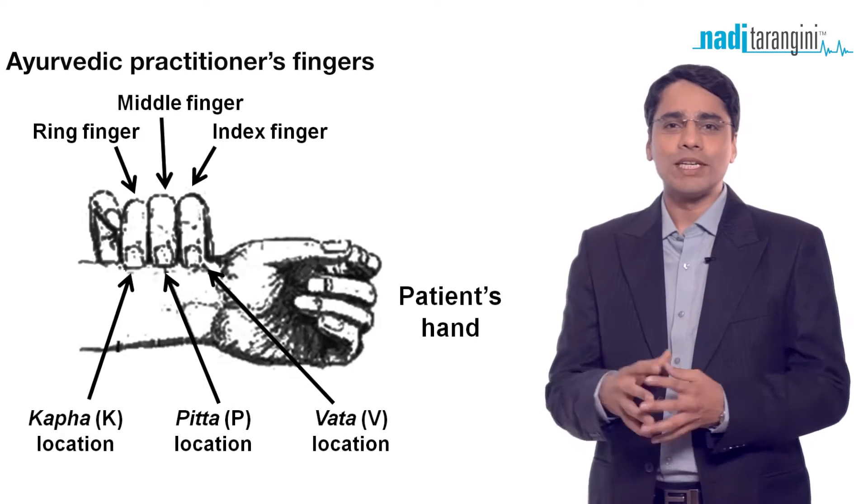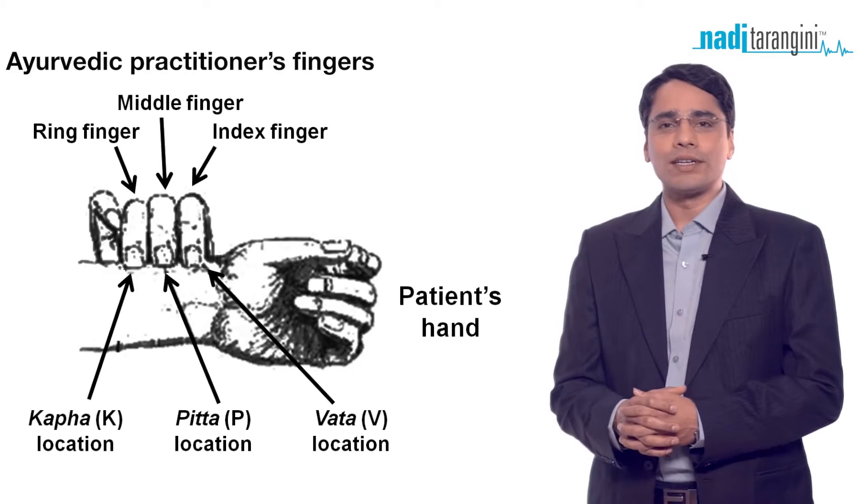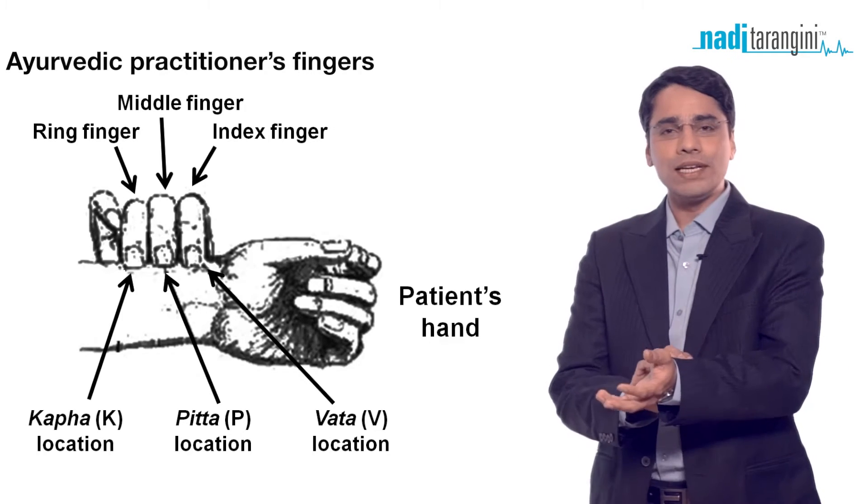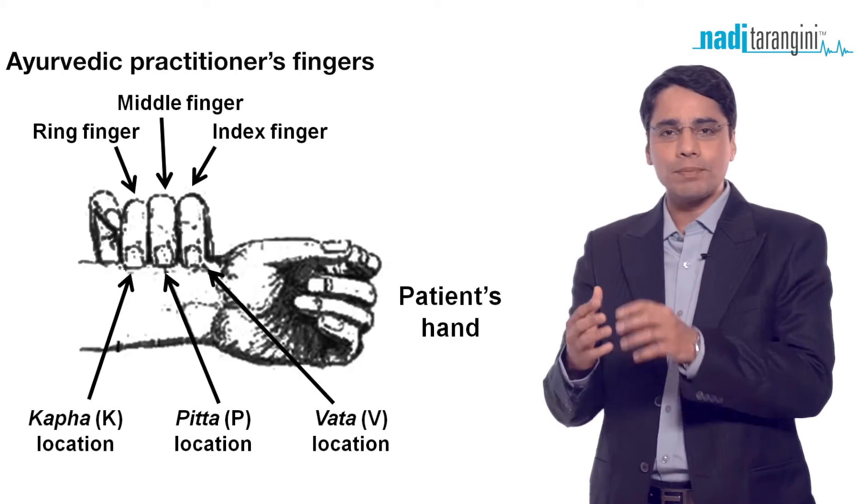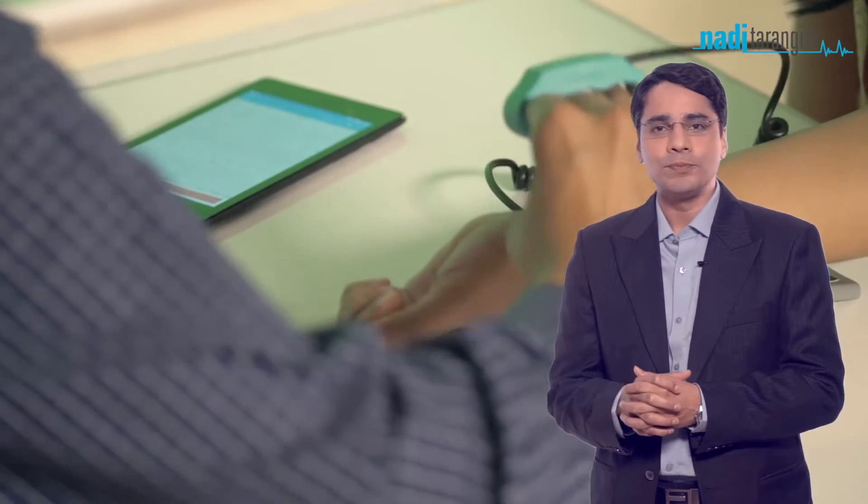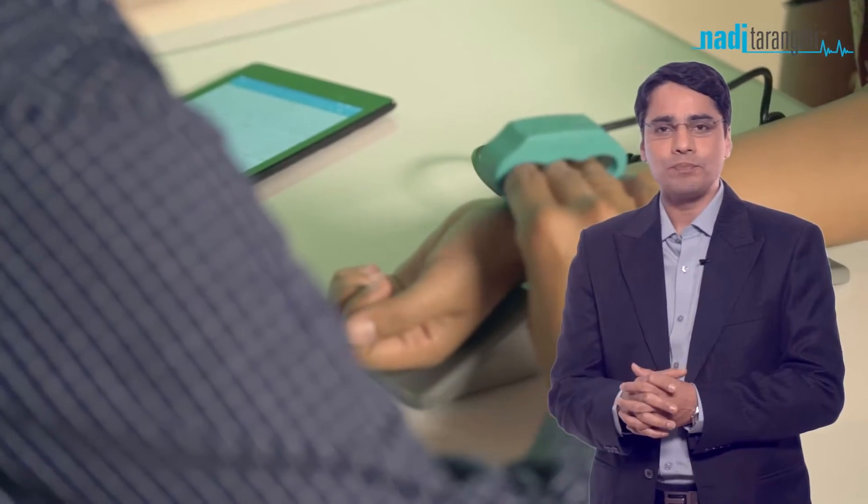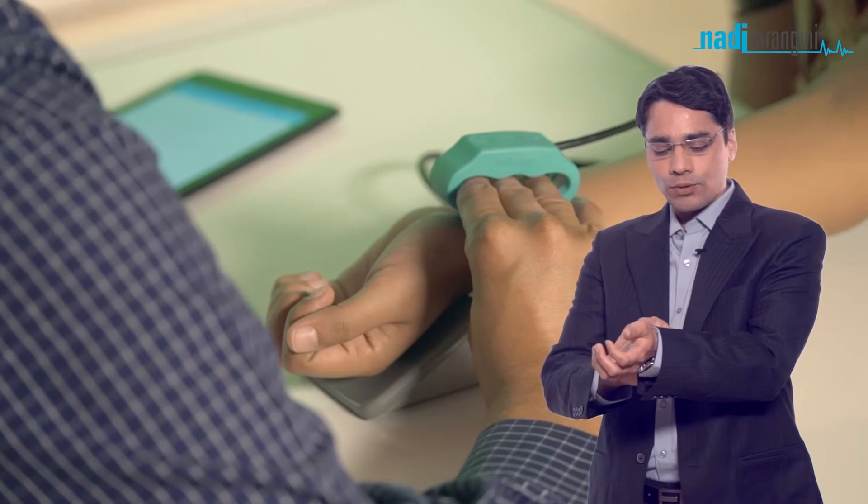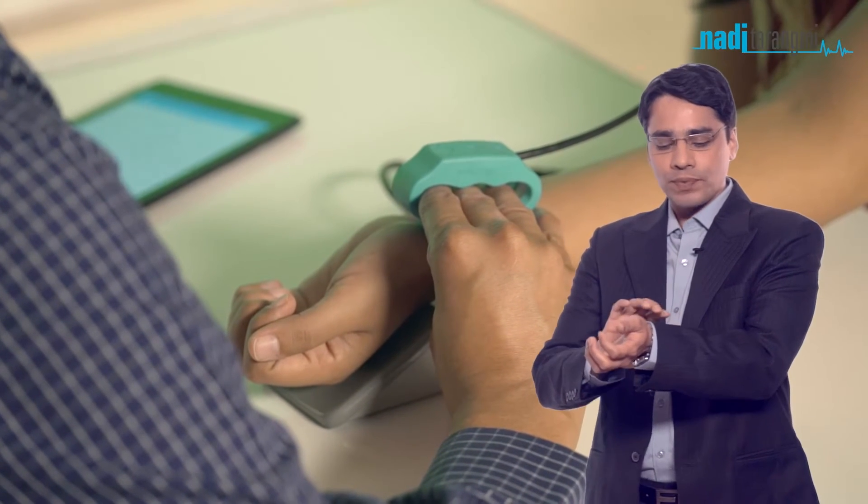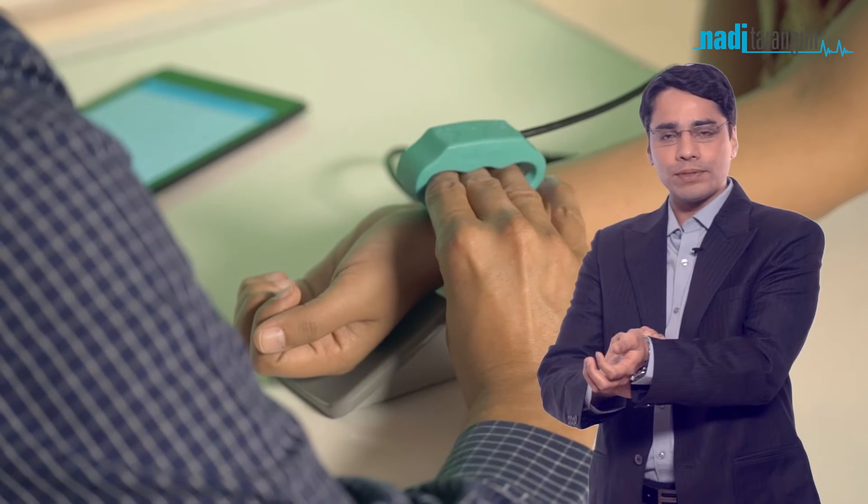Nadi Pariksha is very subjective knowledge. Every doctor has a different technique of feeling the pulse, sometimes at one fingertip or at multiple locations. In Nadi Tarangini, we use three pressure sensors. You wear the doctor's unit and keep them at the locations for Vata, Pitta, and Kapha, then start applying pressure.